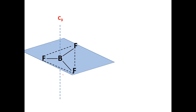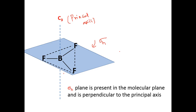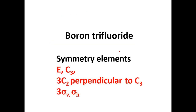Apart from these, the molecular plane itself contains all atoms in the molecule and is perpendicular to the principal axis C3. Because it is perpendicular to the principal axis, this is a horizontal plane — sigma H. To summarize, the symmetry elements of boron trifluoride are: E, C3, three C2 axes perpendicular to C3, three sigma V planes, and sigma H.